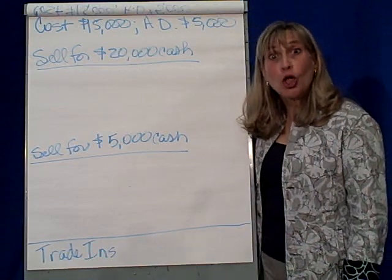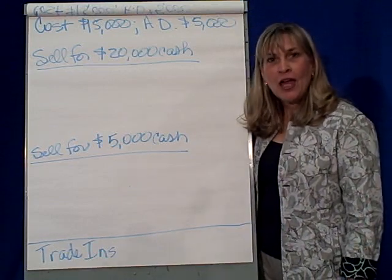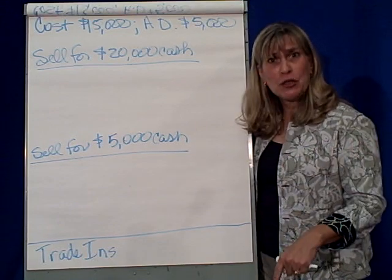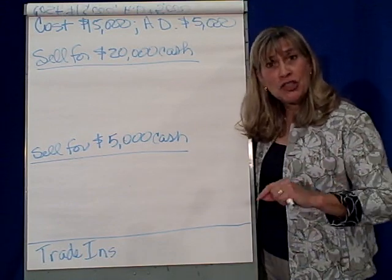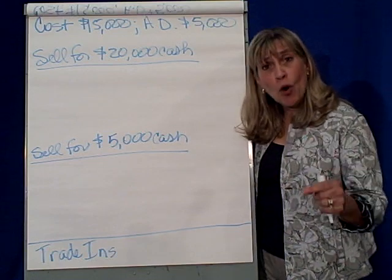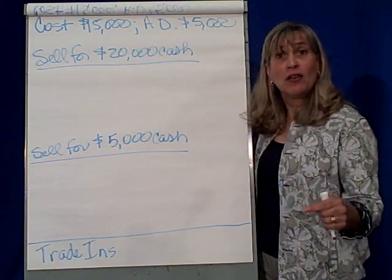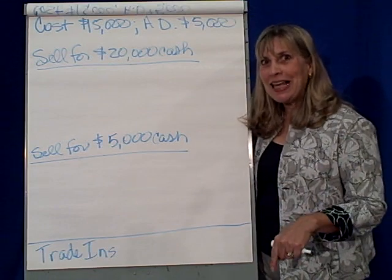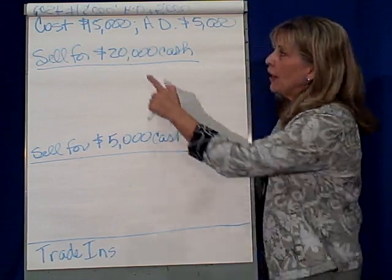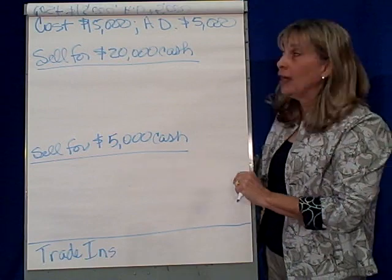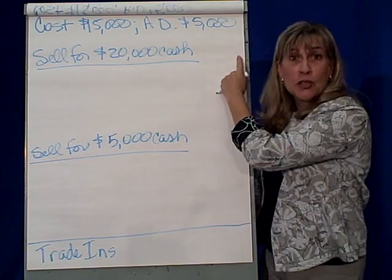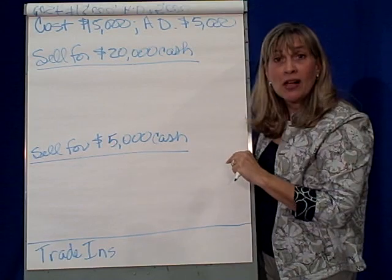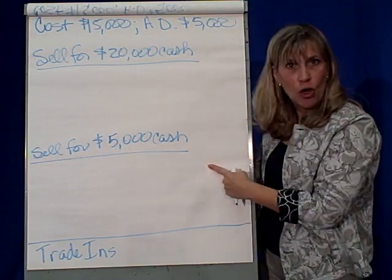We've been selling long-lived assets — we gave it to the garbage man, we gave it to charity, or we broke even on its sale — in other words, we sold it for its book value. Now we're going to look at how we sell a $15,000 asset that has accumulated depreciation of $5,000, and we're going to sell it at a gain and at a loss.